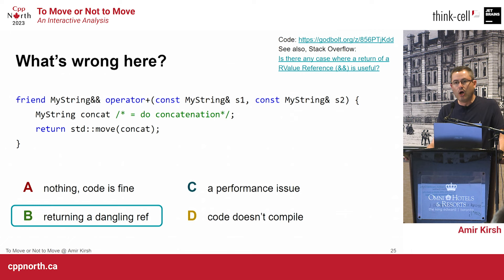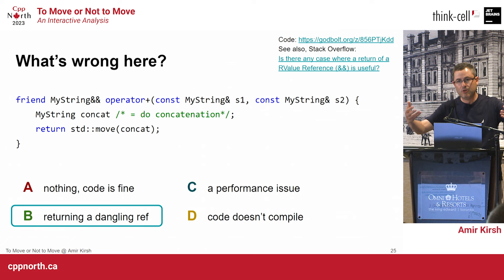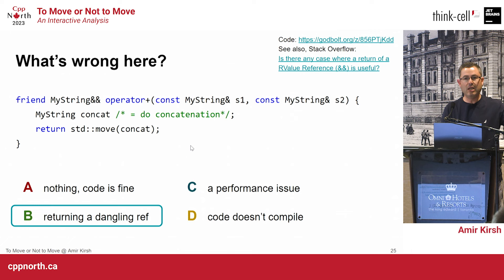The actual answer is B — returning a dangling reference. Returning an rvalue reference is quite rare and usually wrong, because you are actually returning a dead reference. Returning from a function should either return something that is still alive (then you can return by reference), but an rvalue reference says 'here's a reference to something' that is already dead.